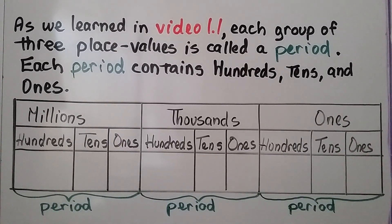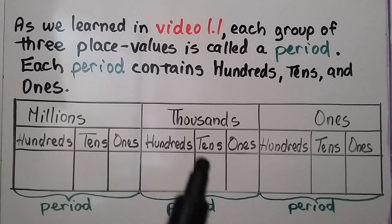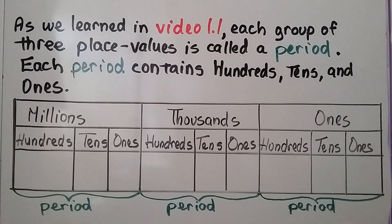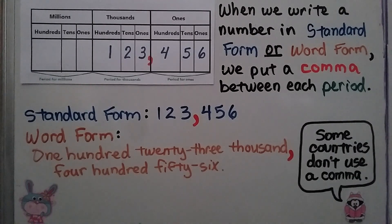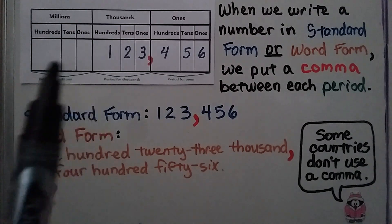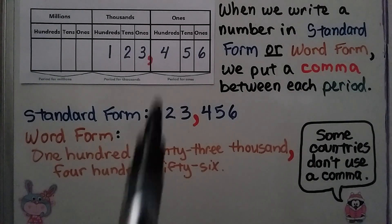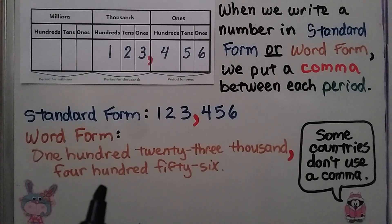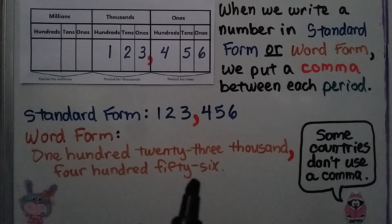As we learned in video 1.1, each group of three place values is called a period. We have a period for the ones, a period for the thousands, and a period for the millions. Each period contains hundreds, tens, ones. When we write a number in standard form or word form, we put a comma between each period. In standard form: 123,456. In word form: one hundred twenty-three thousand, four hundred fifty-six. Some countries don't use a comma, but we do in the USA.